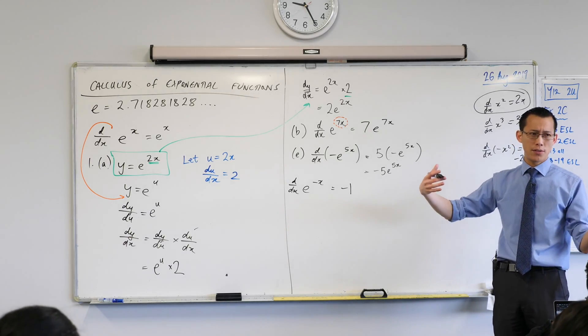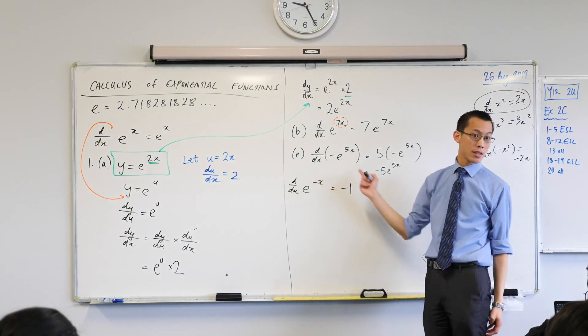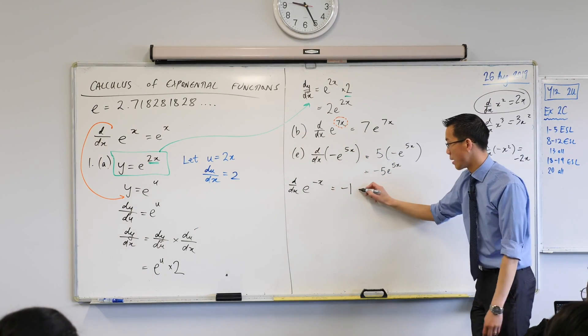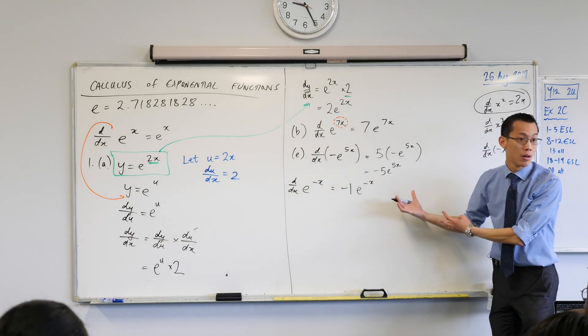And then what's the derivative of the outside part? It's e to the power of a thing. So what happens to that? Same. Yeah nothing happens. So I'm just going to write that e to the power of whatever was there before.